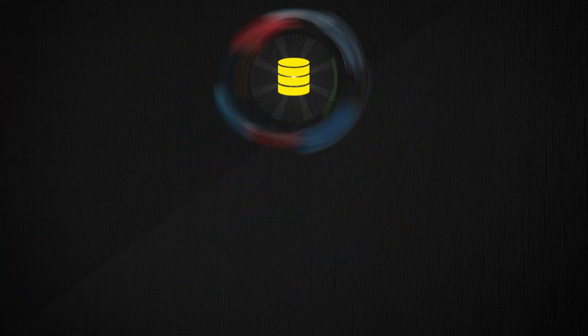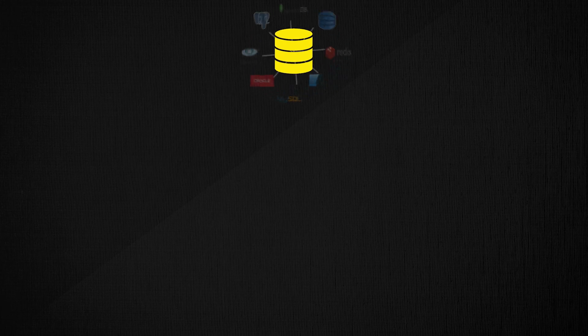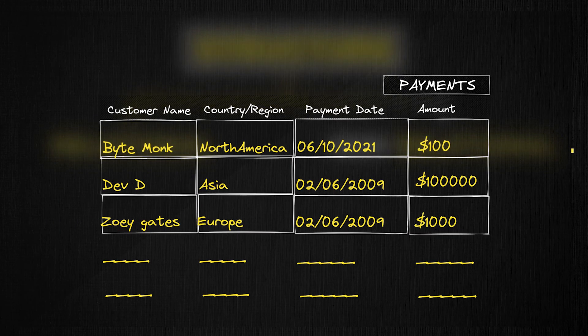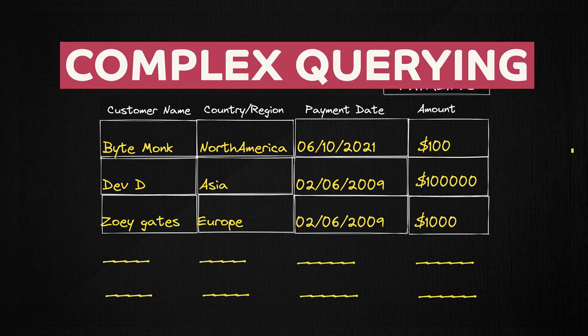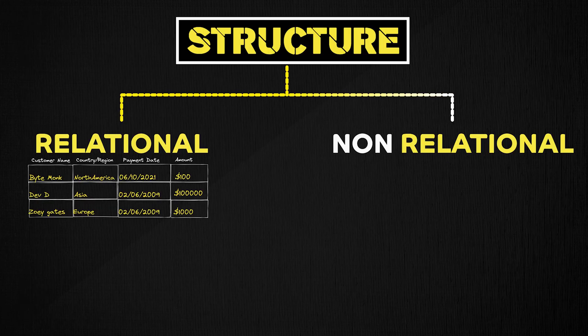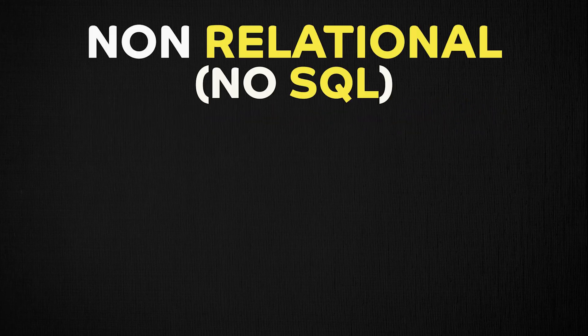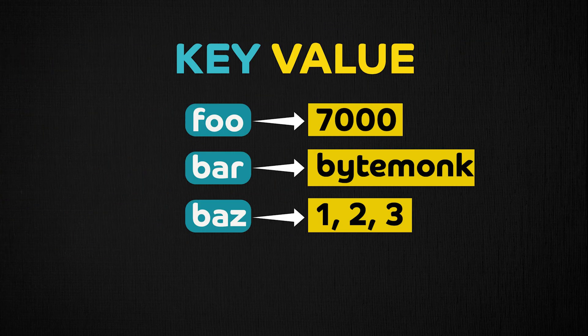In one of my previous videos in the system design playlist, we learned the benefits of structure which a relational database imposes, because it gives us very powerful and complex querying capabilities. However, depending upon the use case, the same structure can be more cumbersome than useful. In those cases, you may prefer to use a non-relational or NoSQL database — a database that does not need any tabular-like structure. Key value store is one of the most popular types of non-relational databases.